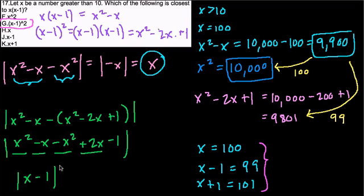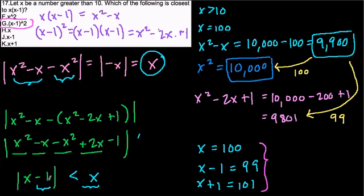Now, x minus 1 is less than x when x is greater than 10 — in fact, it works for x greater than or equal to 2. For example, if x is 100, you get 100 minus 1 equals 99, which is less than 100. So this distance is always less than x. That's also why the condition x greater than 10 is included — if x were negative, say negative 100, you'd have negative 100 minus 1 equals negative 101, whose absolute value is 101, which is greater than 100. So the constraint x greater than 10 is essential for this pattern to hold.